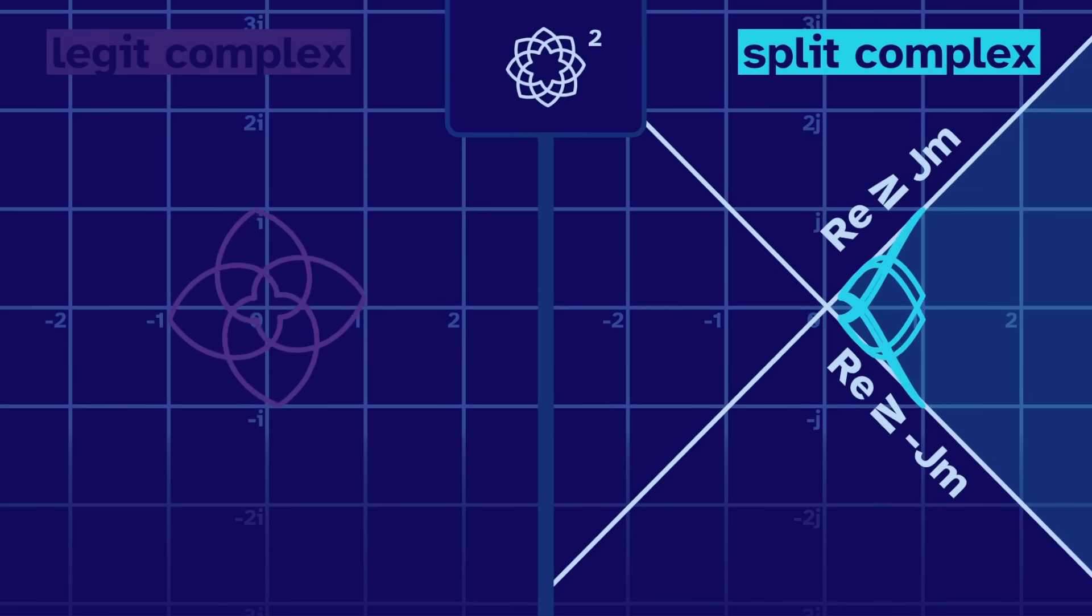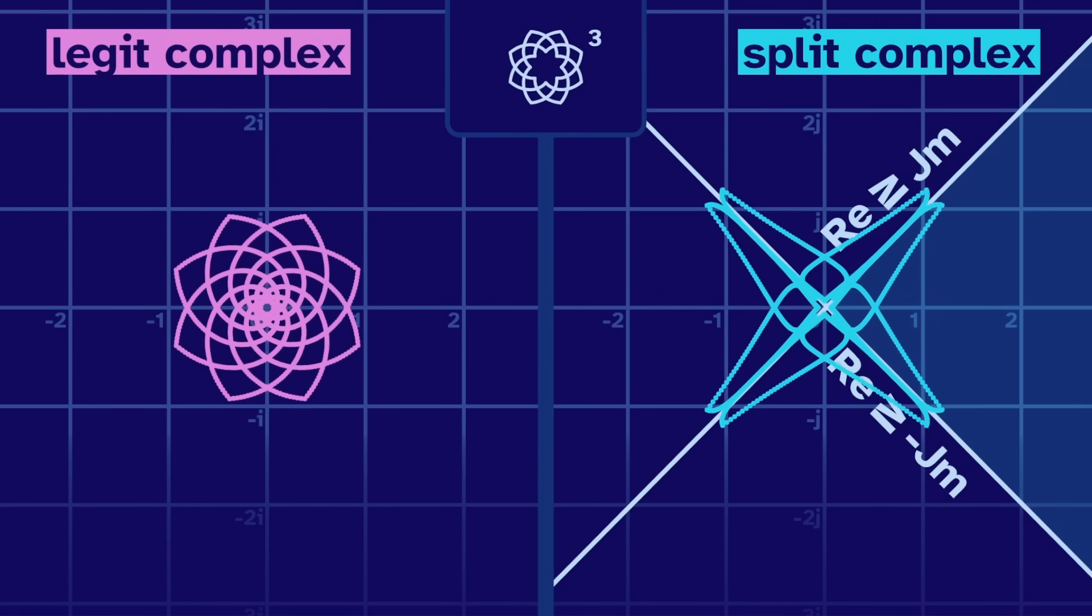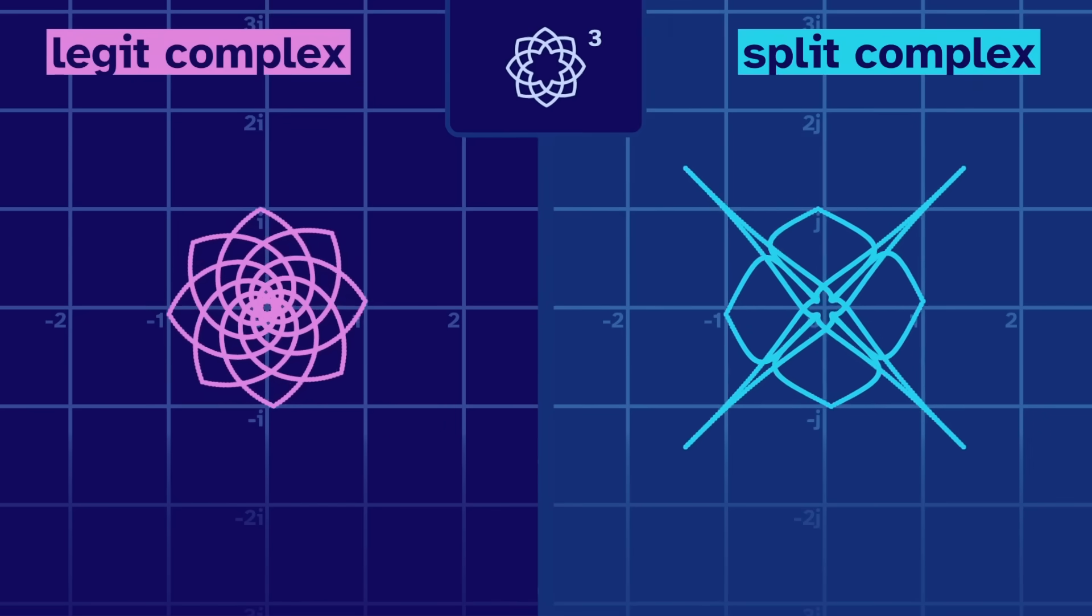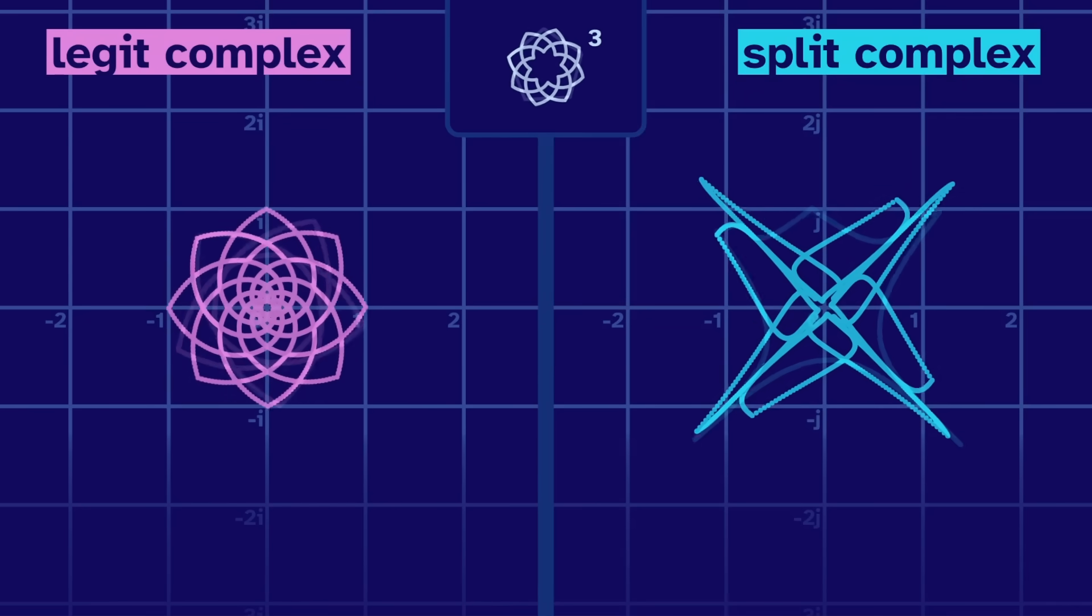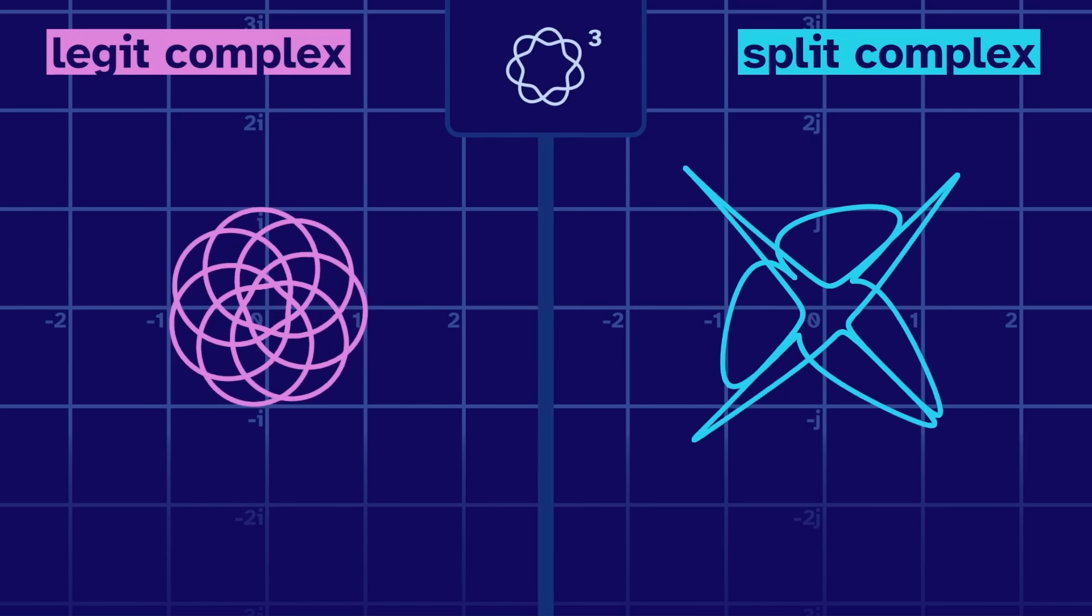But what about the split cubes? With the third power, the splits are in every section, and they make a kind of x shape. It's not just this input. Other shapes also make an x.